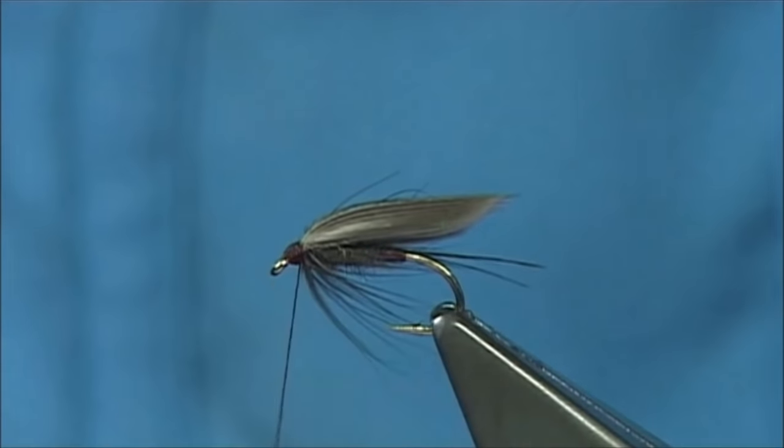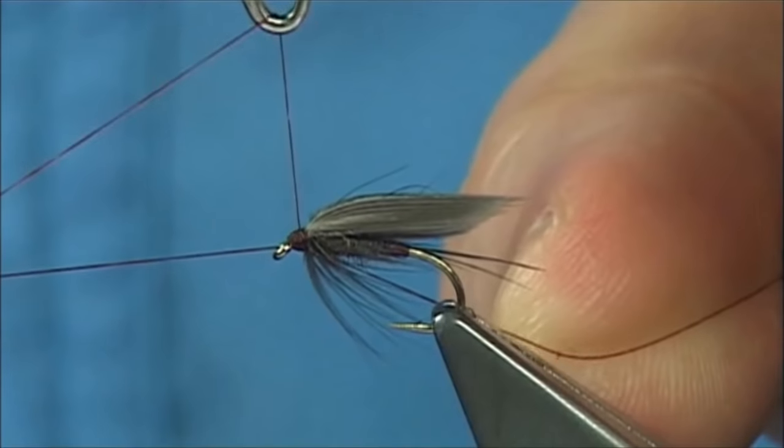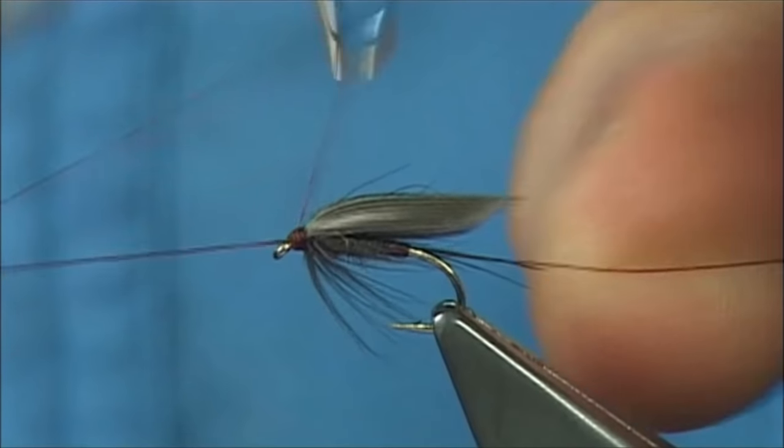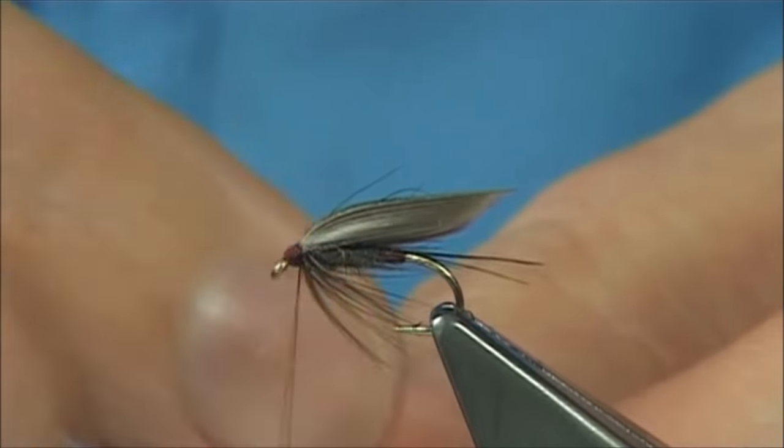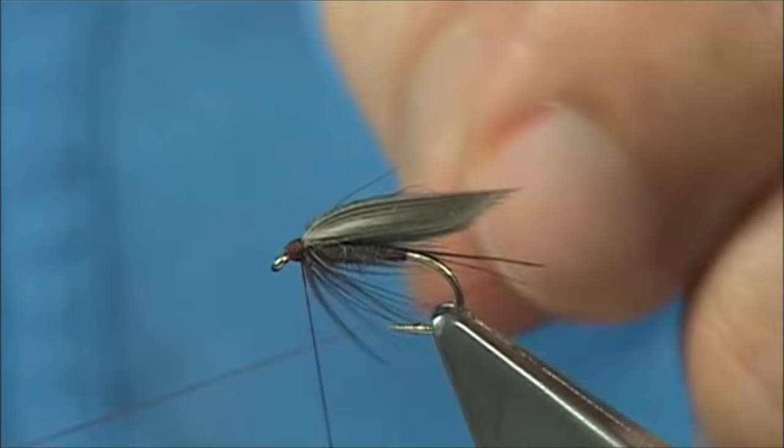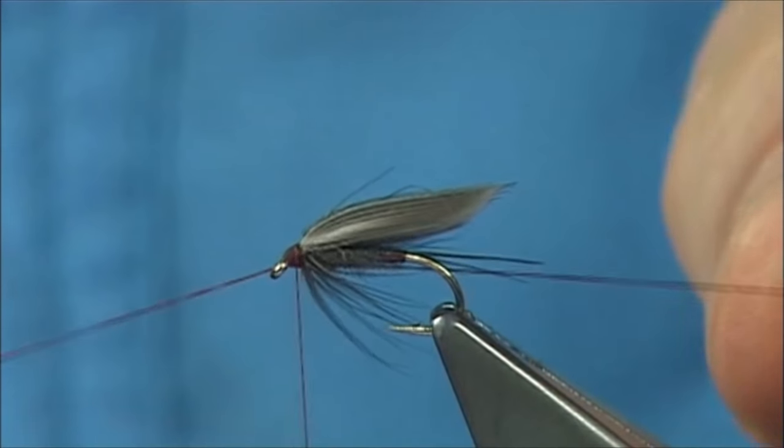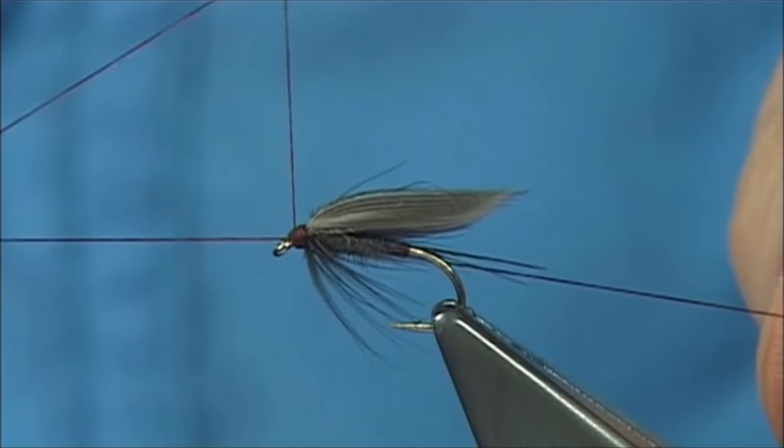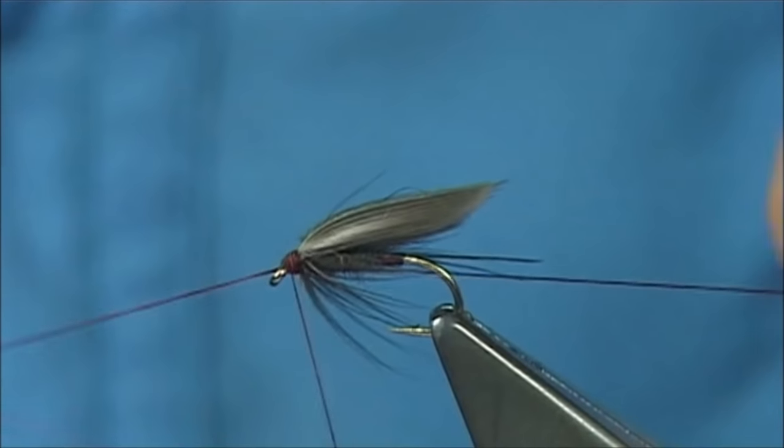Then all we have to do is just a whip finish. Take a little bit of stuff there. Clean that thread. Just again you're doing a turn. Front to the other. You're looking three to four turns.